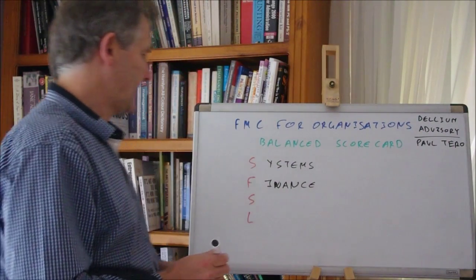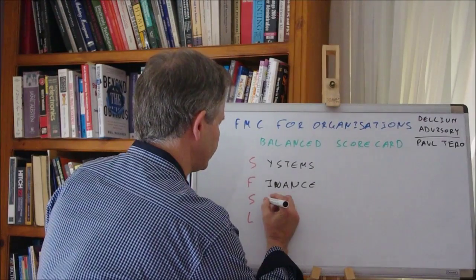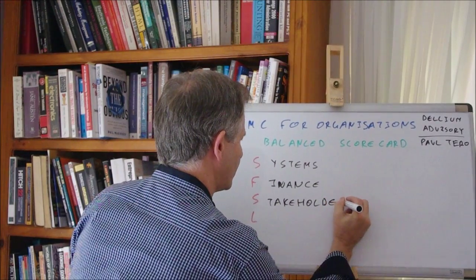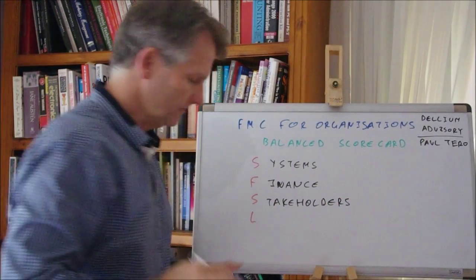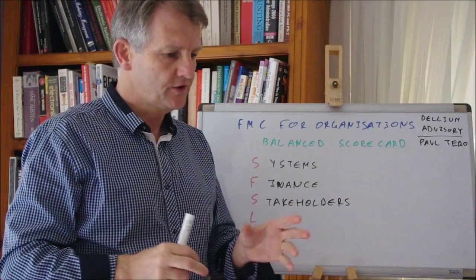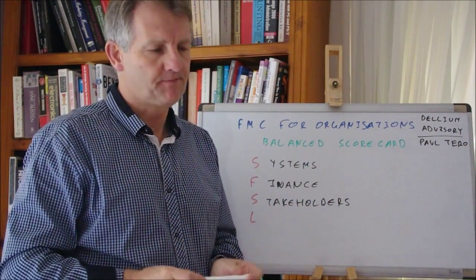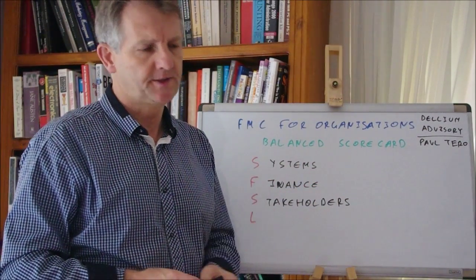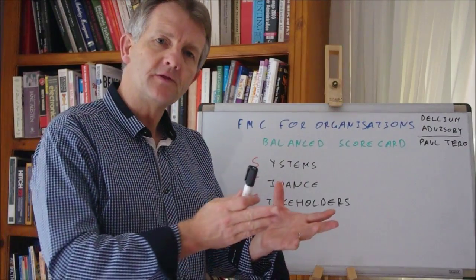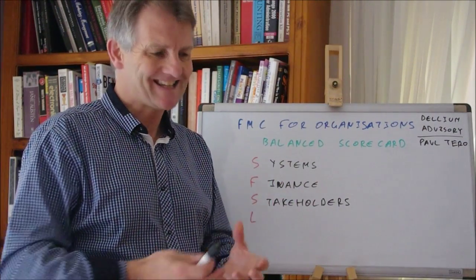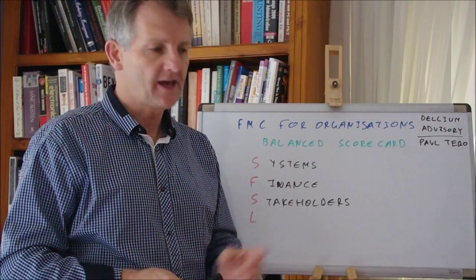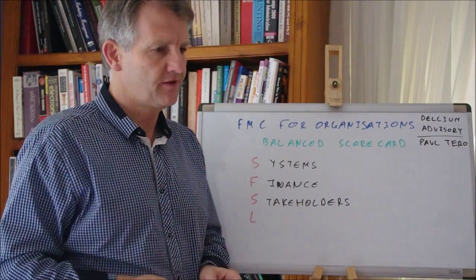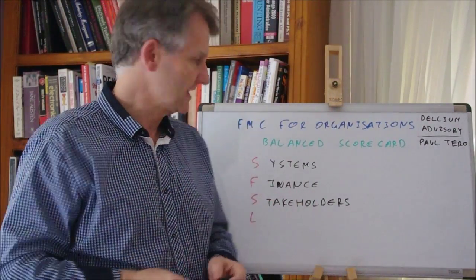The third one here is your stakeholders. Yes, your stakeholders are those who perhaps own the capital, the owners of the business. They have a stake in how well the business is performing, the directors. What about the clients, your customers? They also have a stake in how well your business is performing. Back to those customer service metrics, back to the level of engagement that you have with all types of stakeholders. How do you measure the performance that you have with respect to your stakeholders?